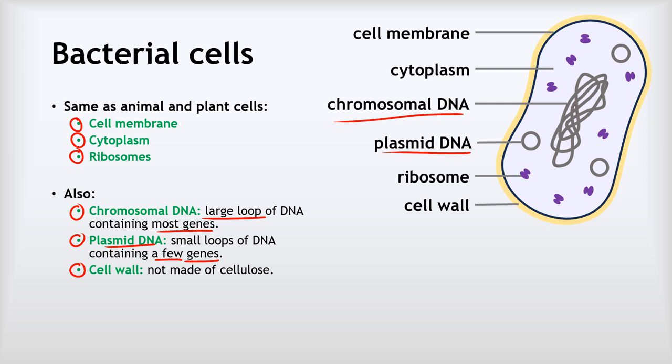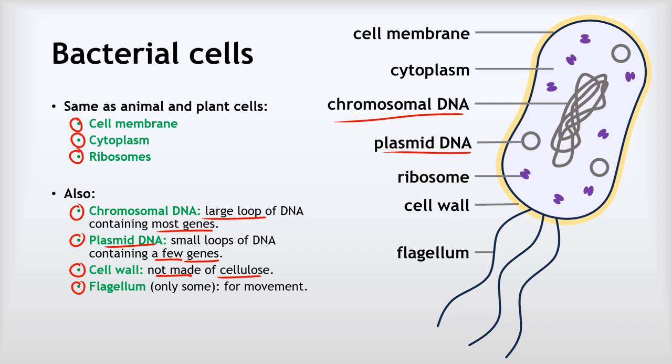Again, similar to a plant cell, we've got a cell wall to provide strength and support, but this time it's not made of cellulose - it's made from a different material. And we've also got what we call a flagellum or a tail, which is there for movement. So this flagellum, or these flagella because it's plural - the flagella can rotate and enable the bacteria to flap around, enable the bacteria to move around. Only some bacteria have these flagella.